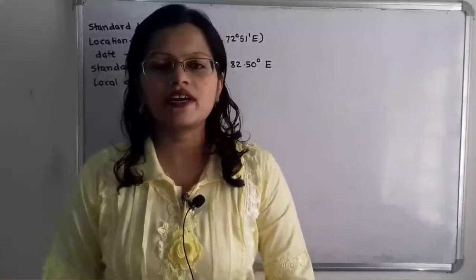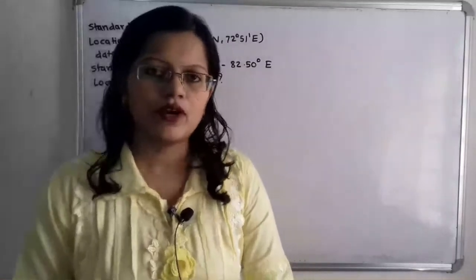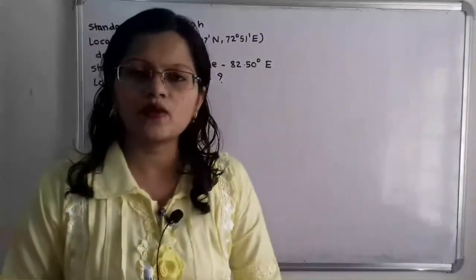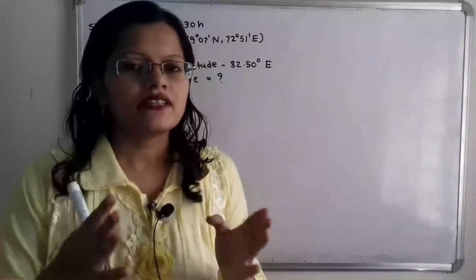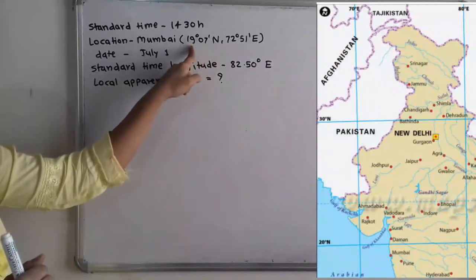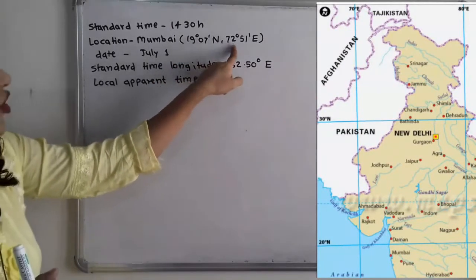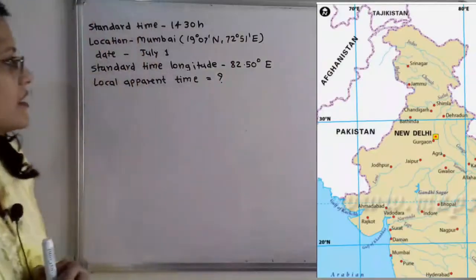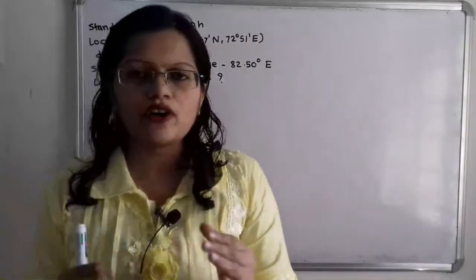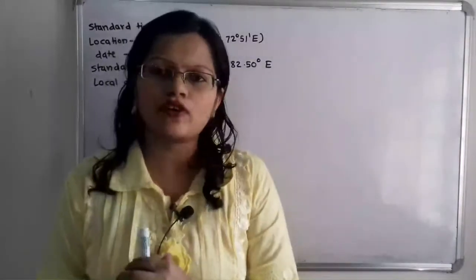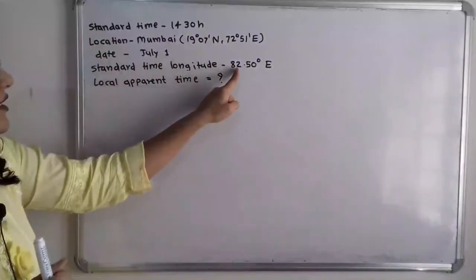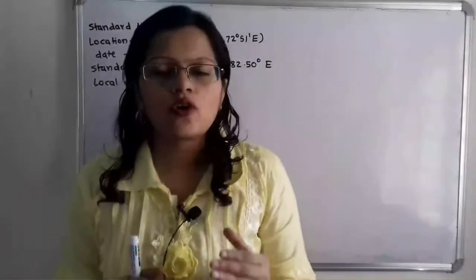Let us first understand the given data and what we have to find. The standard time given is 14:30 hour. The location is Mumbai, given in two forms — latitude and longitude. The latitude is 19 degree 7 minute north, and the longitude is 72 degree 51 minute east. The date is July 1. The standard time longitude is 82.50 degree east, and we have to find the local apparent time.